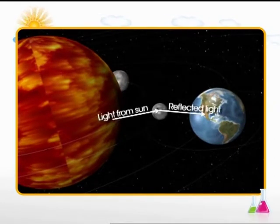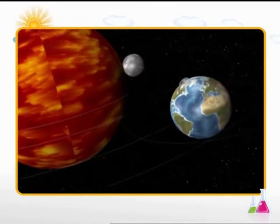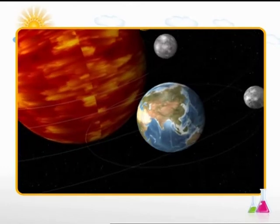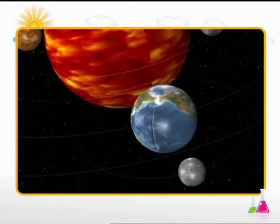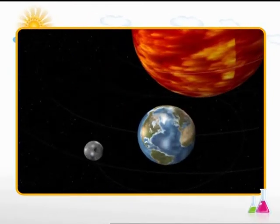The moon does not have its own light and reflects the light of the sun. We are able to see only that part of the moon on which sunlight is reflected. The time period taken by moon to complete one revolution around the earth is known as the lunar month. As the moon circles the earth, it seems to appear in different shapes in the sky.